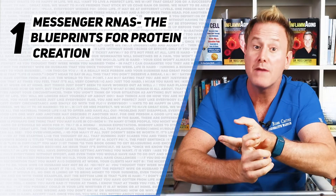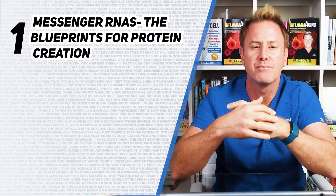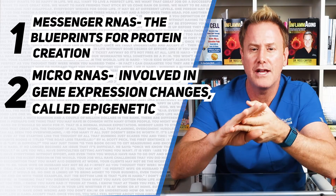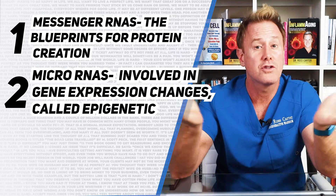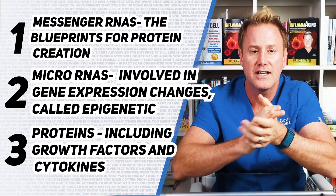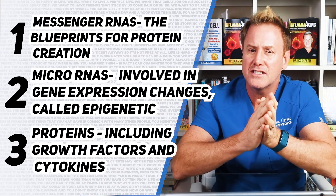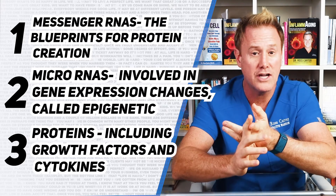This information includes three primary things. Number one, you have your messenger RNA, which is really the blueprints for protein creation. Number two is something called microRNA, which is involved in gene expression changes, also called epigenetics. And three are your proteins, including growth factors and cytokines. But unlike MSCs, exosomes do not contain DNA or other cell organelles like your mitochondria, endoplasmic reticulum, or a nucleus that could cause a rejection commonly seen in MSC transplantation.